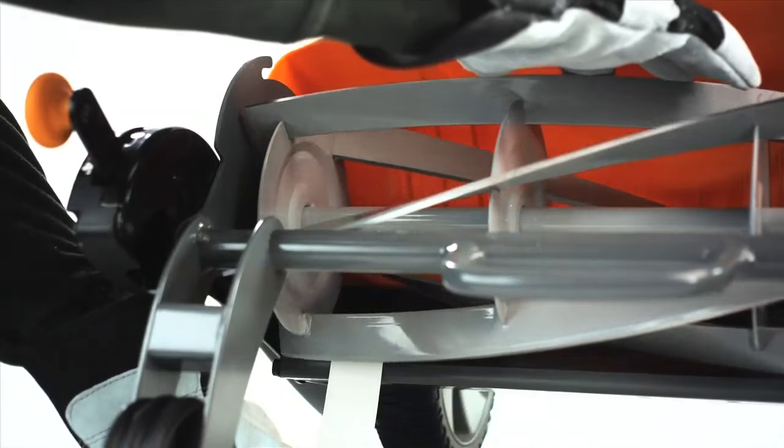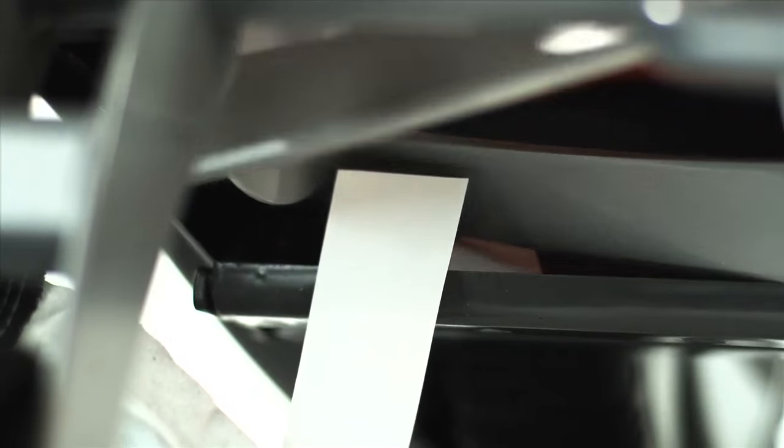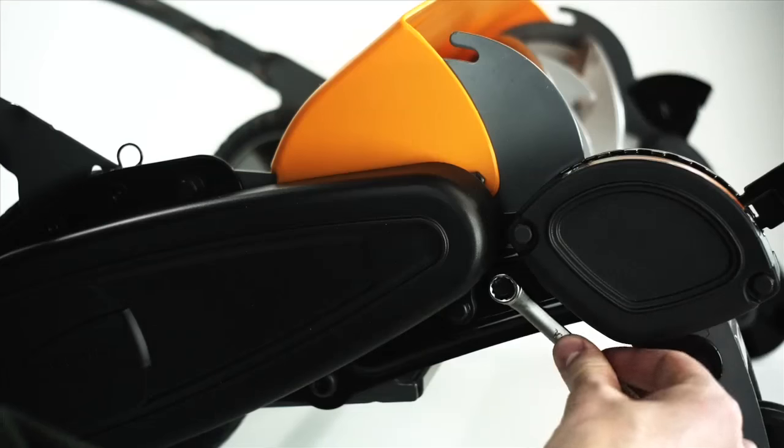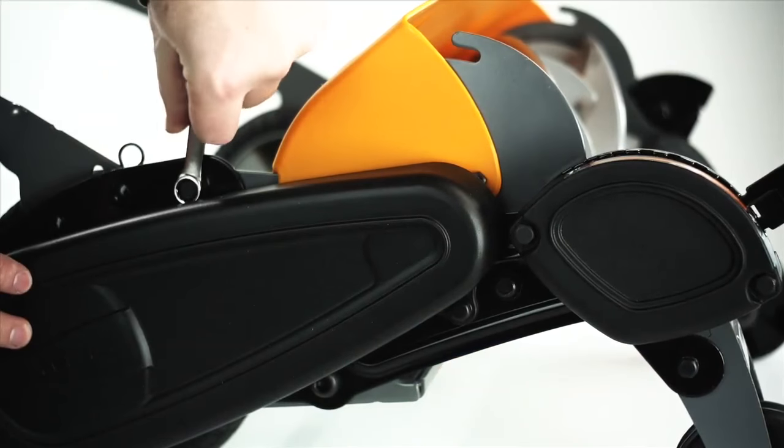Check the cutting system again. Listen for contact and check the cut with the paper strips. If there is no contact and the blades cut paper, tighten the locking bolts with the appropriate wrench.